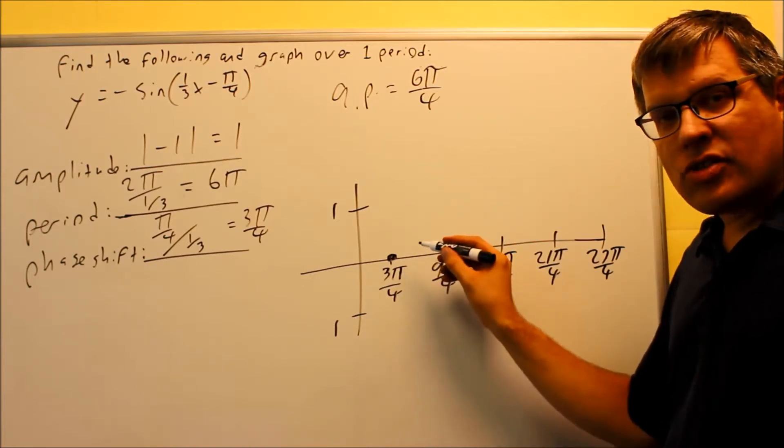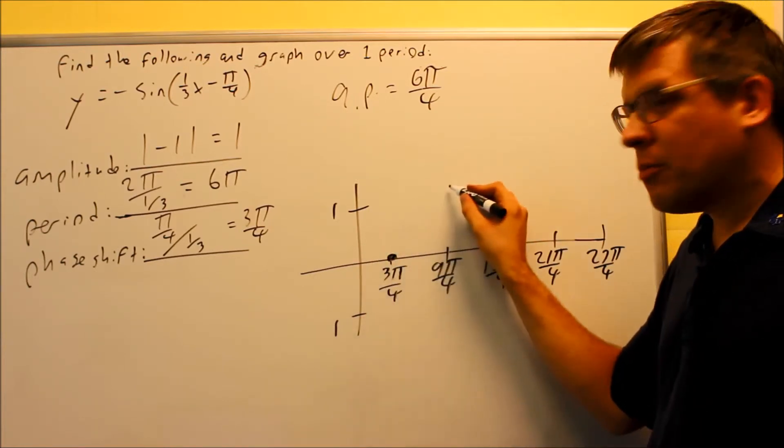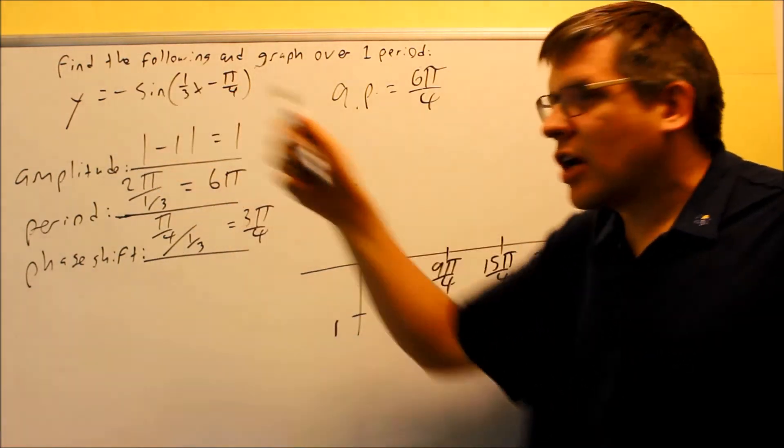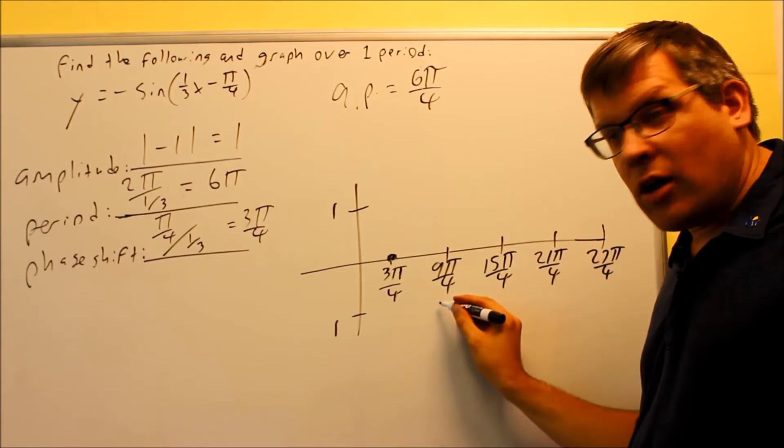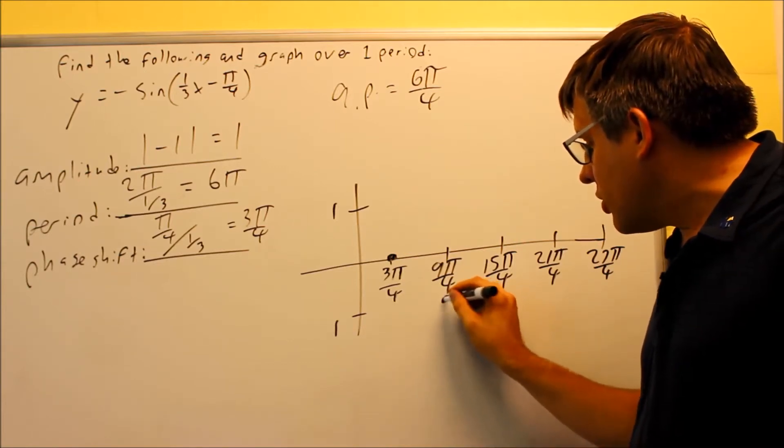If I have a positive sine graph, the graph will begin by going up. However, this one has a negative sign in front. So if you have a negative sign in front of the sine, you're actually going to start by going down. So we're going to go down to here.